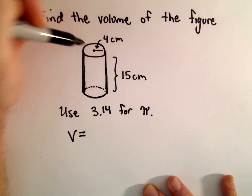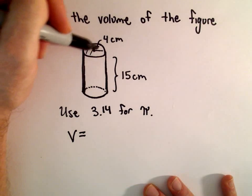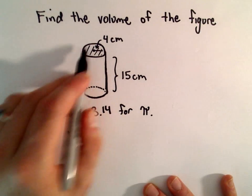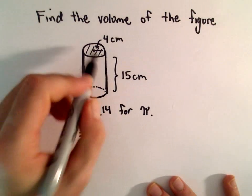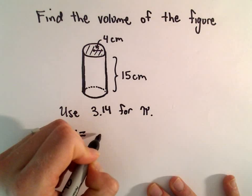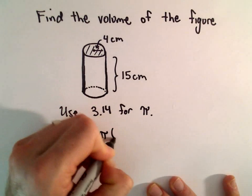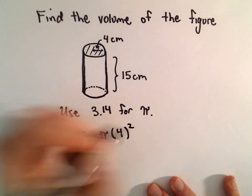To figure out the area of one of the bases, since it's a cylinder, that will be a circle. So the area of one of the faces would be pi times the radius squared.